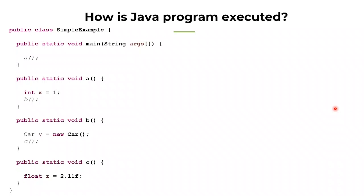For this session, I have written a simple Java program called SimpleExample, and this program has a main method. This main method is invoking method A. Method A has a primitive data type integer whose value x is equal to 1. After creating this primitive data type, method A is invoking method B. Method B is instantiating a car object — a complex data type — and assigning it to variable y. After doing that, it goes on to invoke method C. Method C is just creating a primitive float data type z equal to 2.11f. This is a very hypothetical, simple Java program. Let us see what happens behind the scenes when this program is executed.